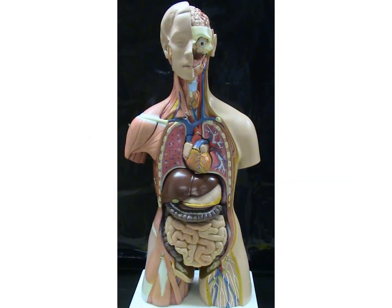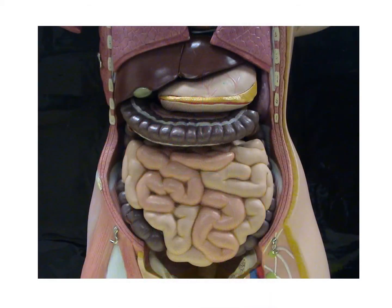Let's now look at the large intestine on the torso model. We're going to zero in on the abdominal region. Here you can see some of the ascending colon, the transverse colon, and a portion of the descending colon, but a lot of it is obscured by the small intestine.